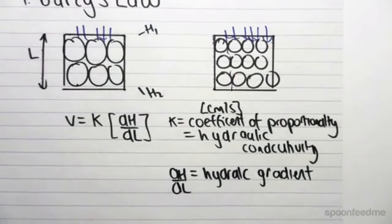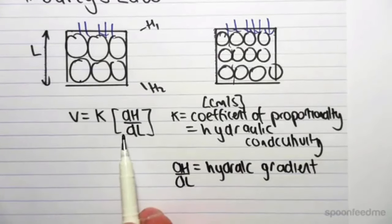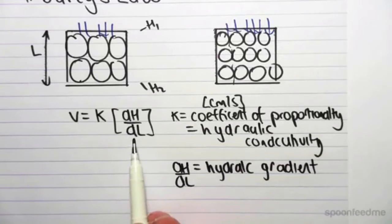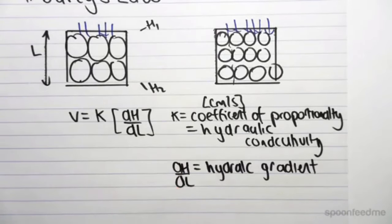We now know that the velocity through a soil sample is dependent on the hydraulic gradient, which is DH over DL, as well as this coefficient of proportionality which considers the actual soil sample.